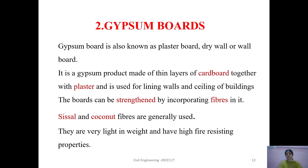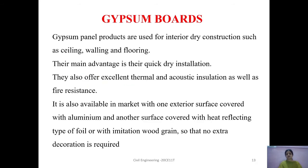These boards can be strengthened by using fibers such as sisal and coconut fibers. Gypsum boards are very light in weight and have high fire-resisting properties. Gypsum panel products are used for interior dry construction such as ceiling, walling, and flooring. Their main advantage is quick dry installation, and they also offer excellent thermal and acoustic insulation as well as fire resistance. In the market, gypsum boards are also available with one exterior surface covered with aluminum and another surface covered with a heat-reflecting foil, so no extra decoration is required.